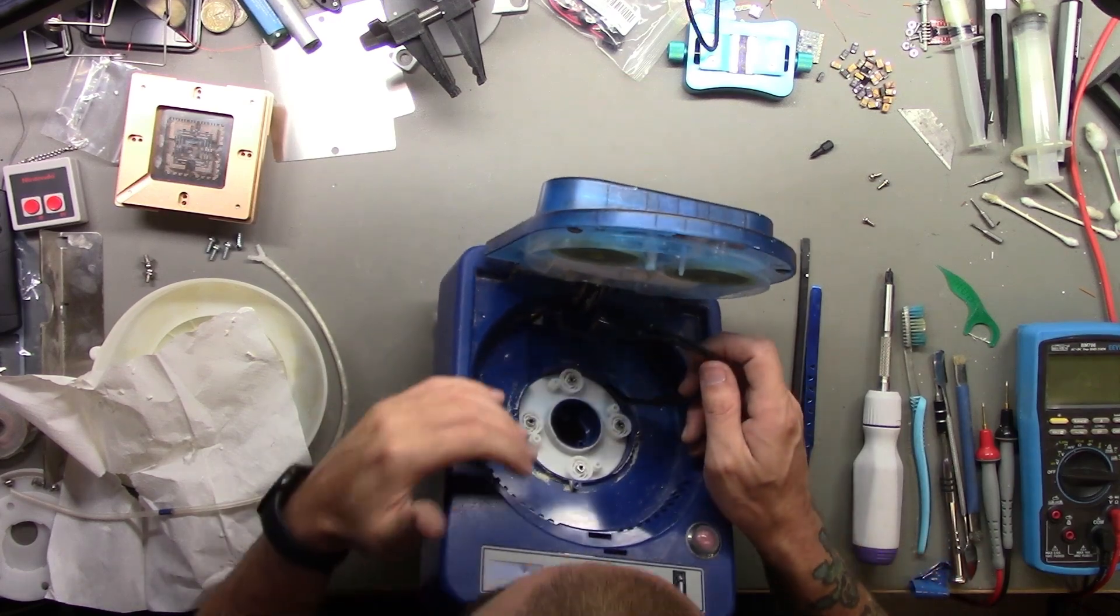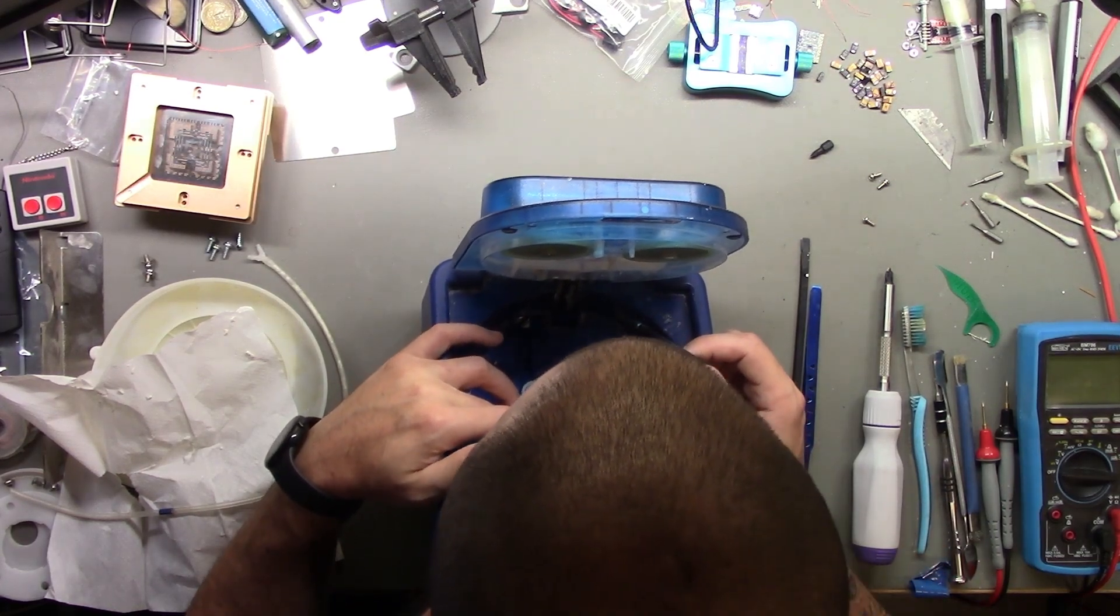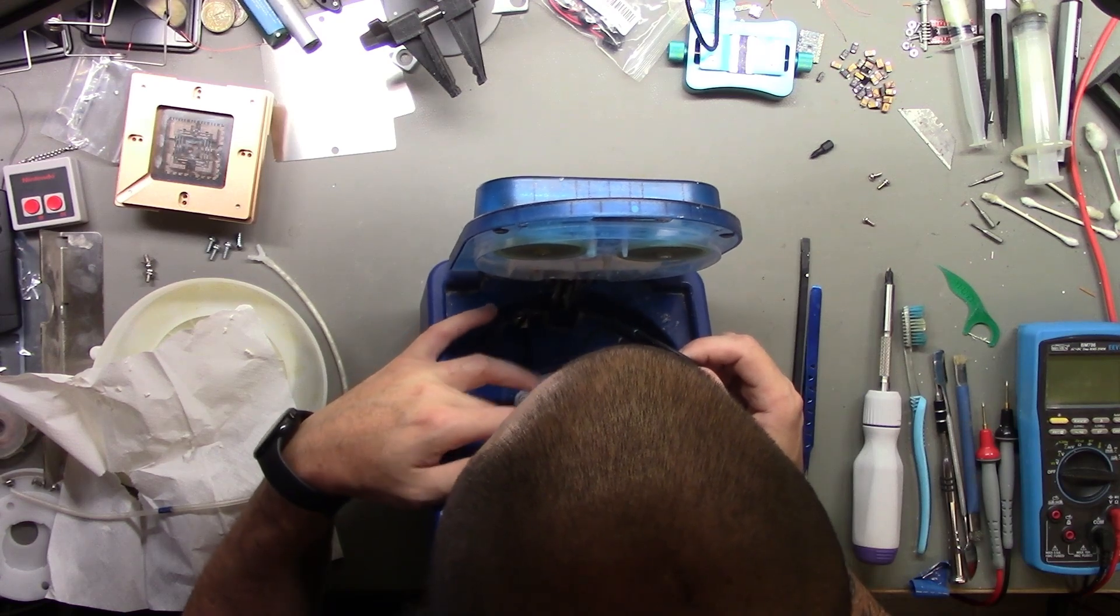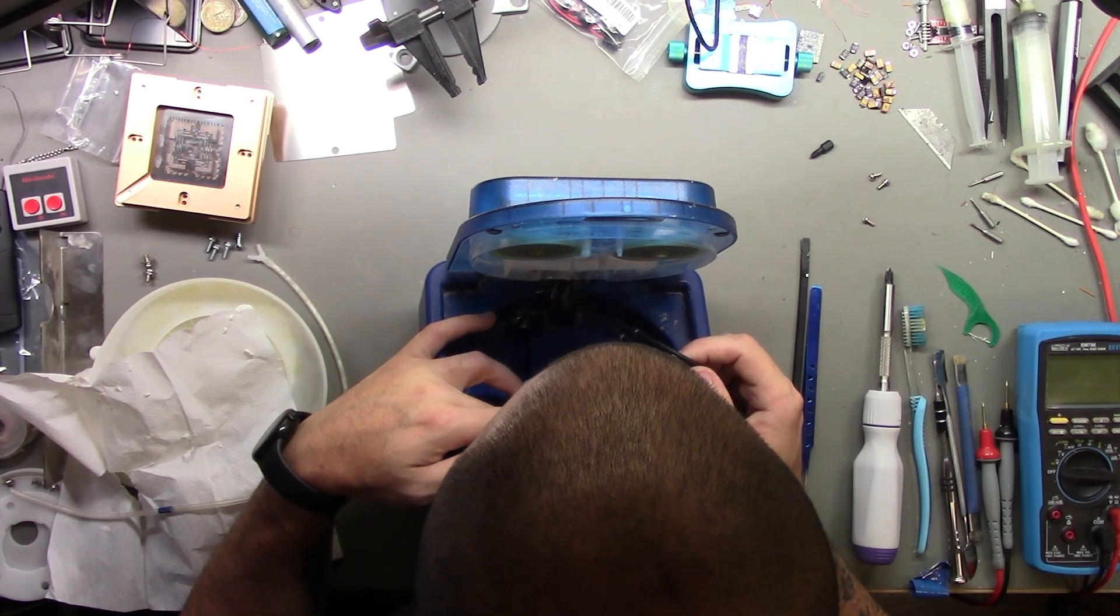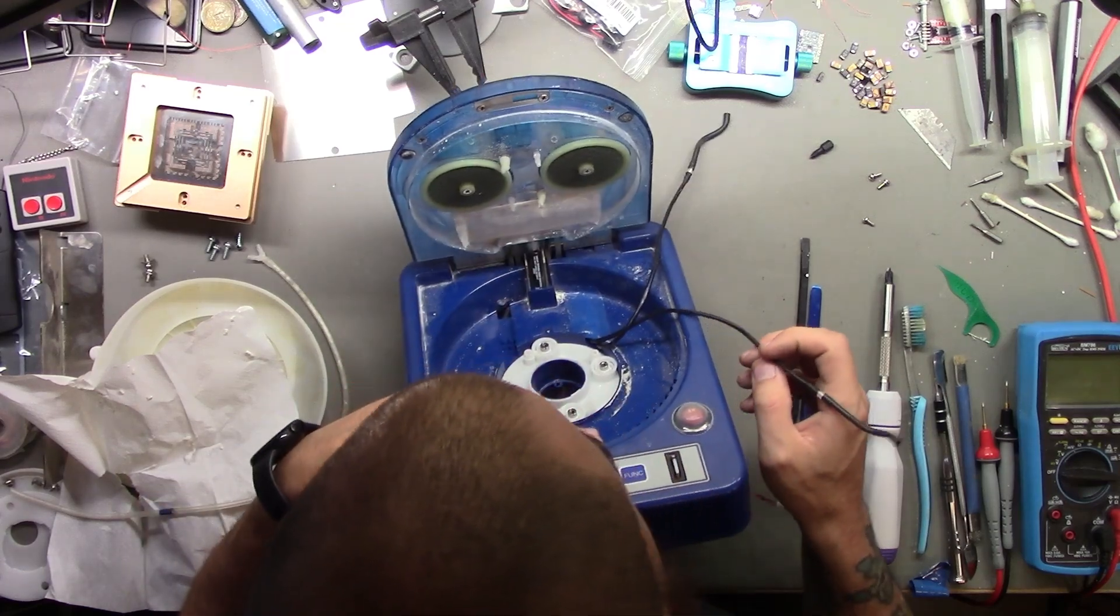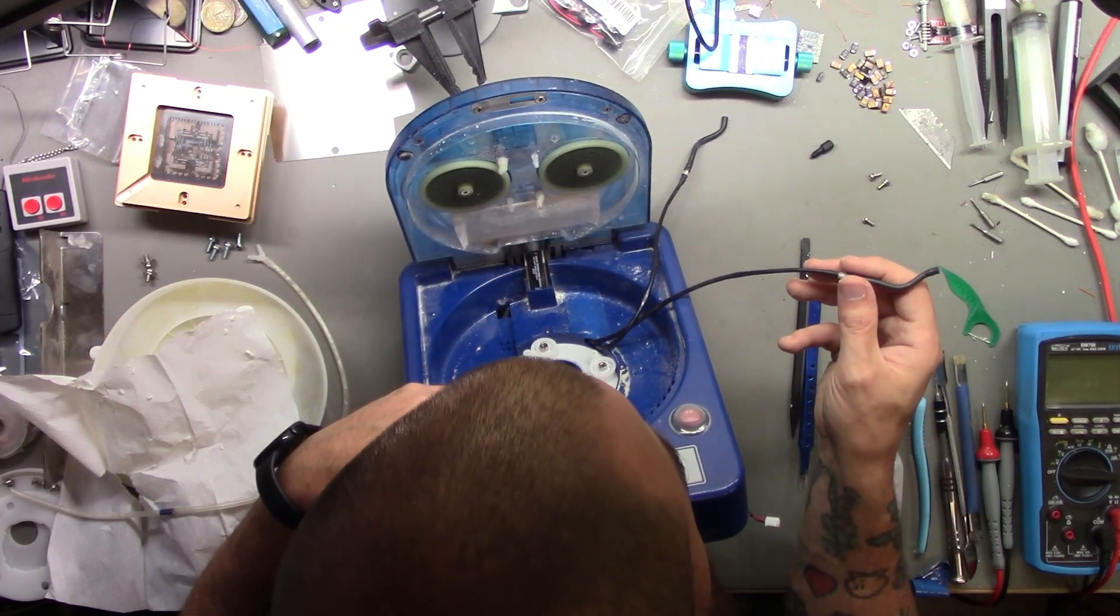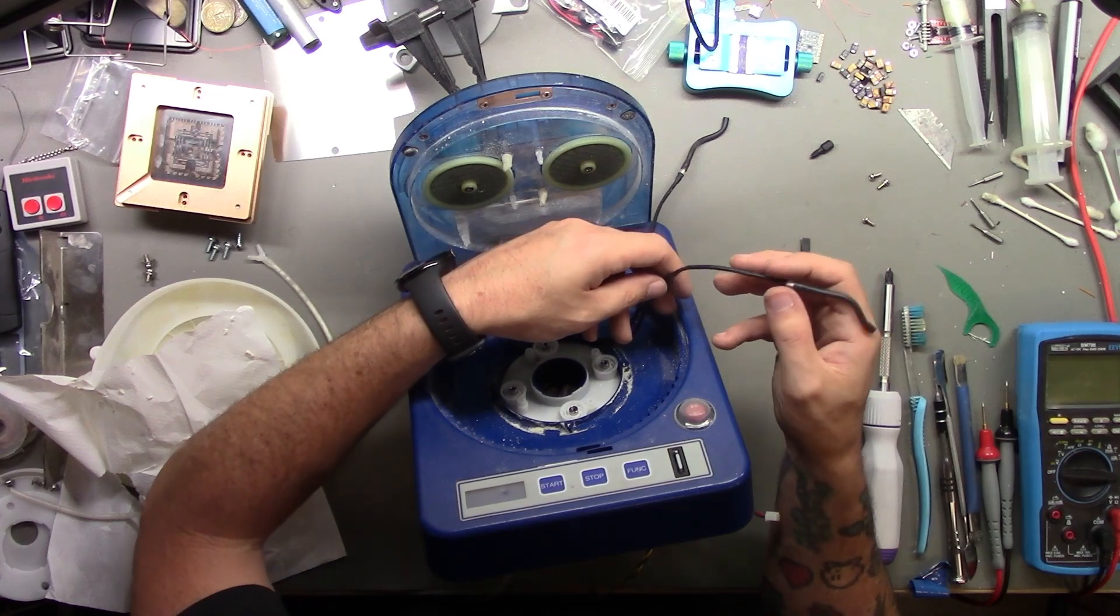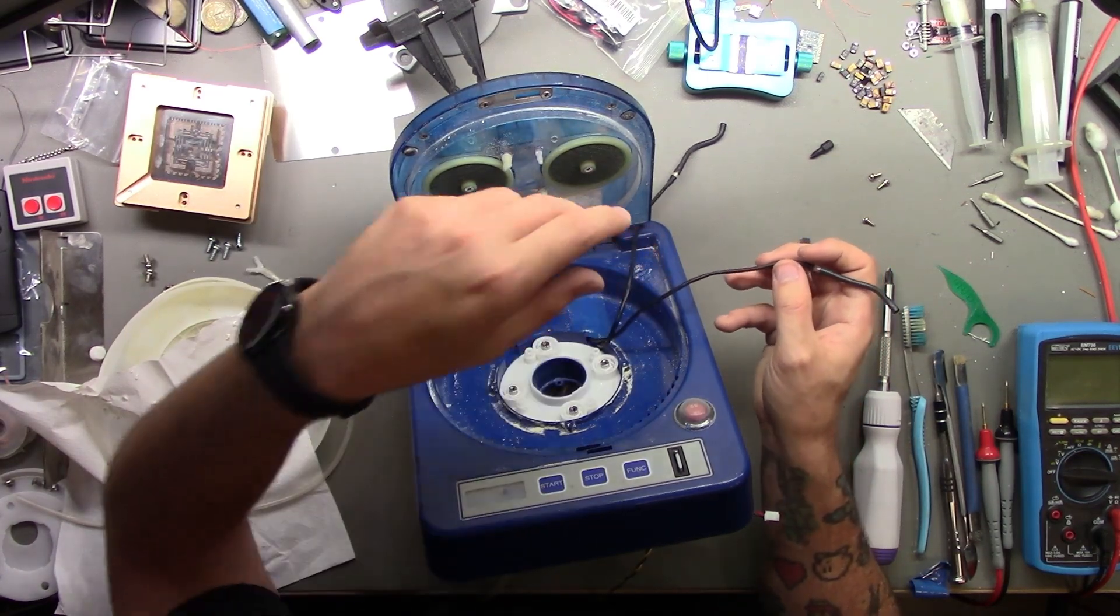So I guess this squeezes the compound out when it rotates. That's crazy, okay. I can already see some flat spots right here. See where it's skinnier.